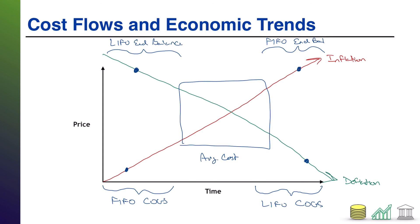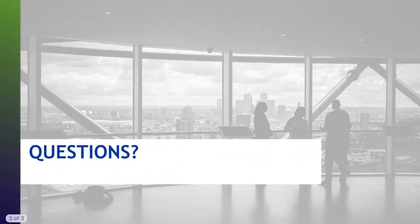Specific identification wouldn't even be affected by any of this, because in that situation you know exactly what you're selling and what price you paid for it. It doesn't matter how prices are trending — you're always just recording what you paid for the specific item you sold. So that's not really relevant to this chart. That's it for how economic trends impact cost flow decisions. I hope you found this helpful and I hope you join me for another video.